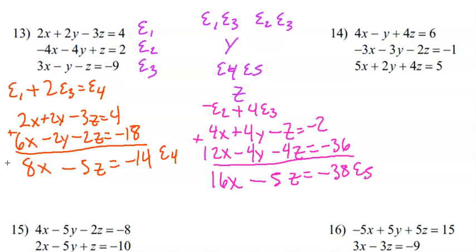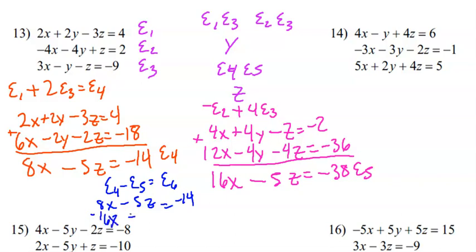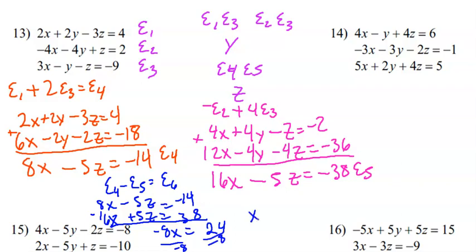We'll take E4 and E5 and get rid of Z. We'll do E4 minus E5 to get that. So we can write 8X minus 5Z equals negative 14, and then the negated E5 gives negative 16X plus 5Z equals 38. Combining the two equations gives negative 8X equals 24. Divide each side by negative 8 — X equals negative 3.